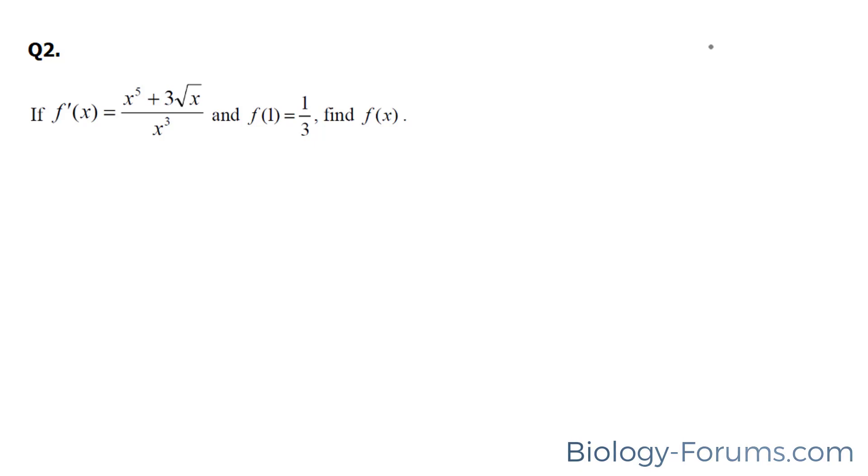We'll use the same steps as before. We're going to find the antiderivative of this. f at x is equal to, and I'm going to rewrite it in such a way where it's easy for us to find the antiderivative. x to the power of 5 over x to the power of 3, we can use the quotient rule for exponents to reduce this, plus 3 times the square root of x over x to the power of 3.